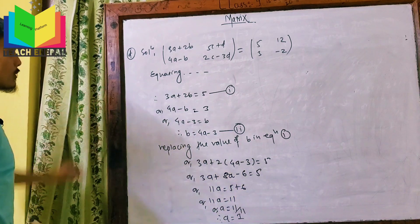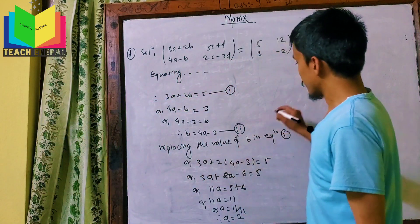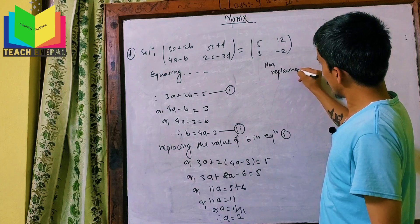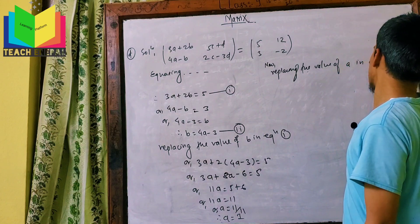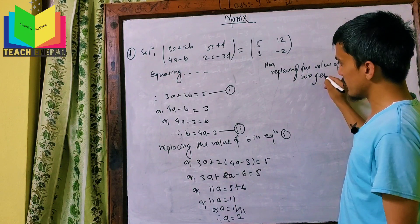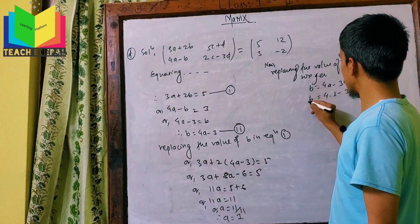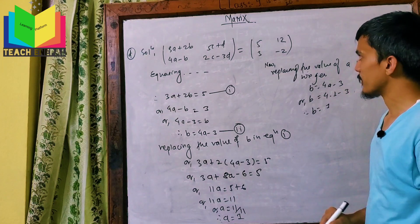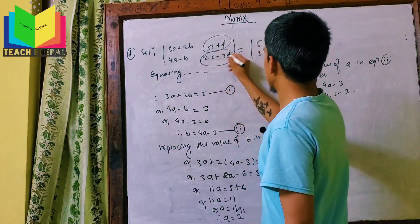Now replacing the value of a equals 1 into equation 2: b equals 4(1) minus 3, therefore b equals 1.